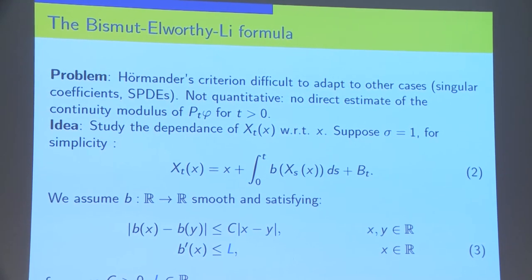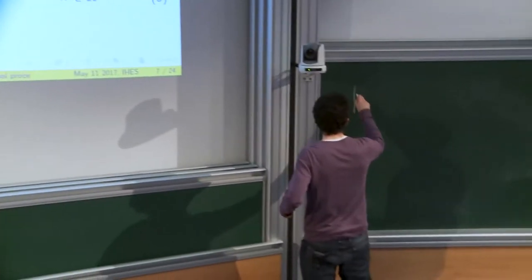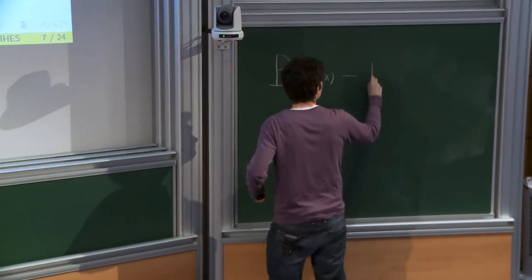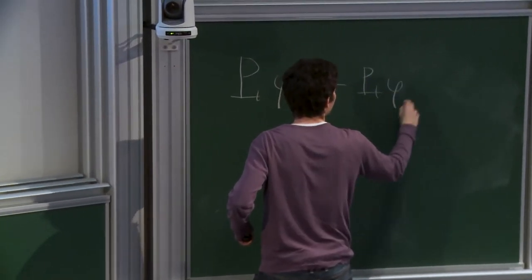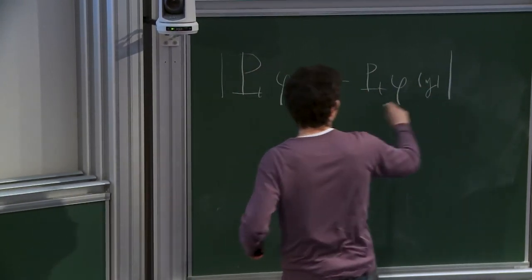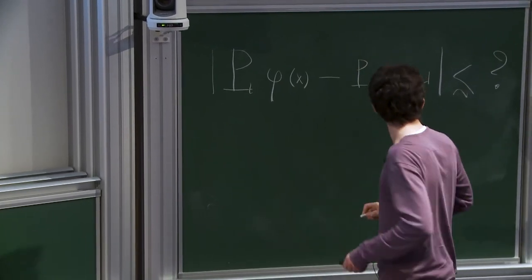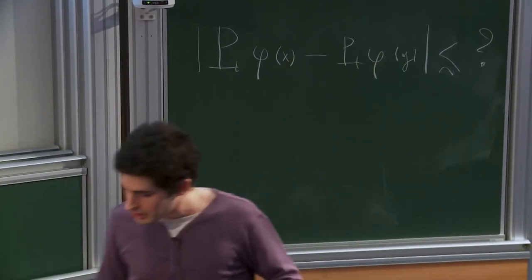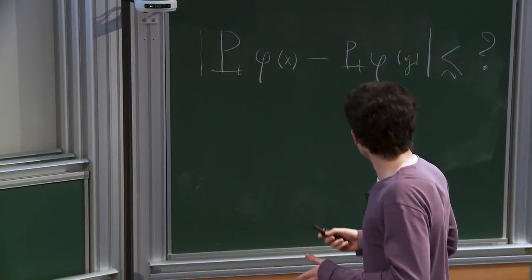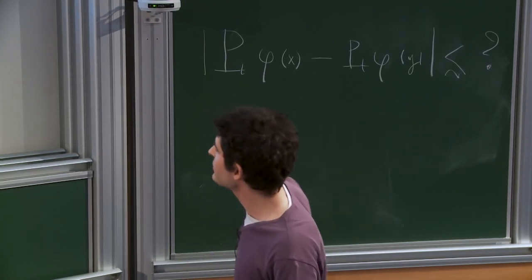My problem is for any given T to quantify the difference P_T φ of X minus P_T φ of Y when X and Y are close. The question is how to obtain a bound of this quantity. The very efficient tool to do that is the Bismut-Elworthy-Li formula, which I'll explain to you now.